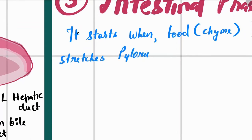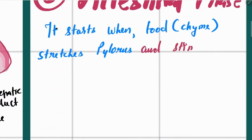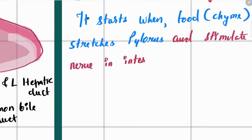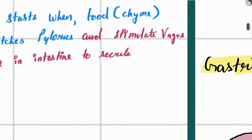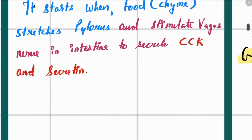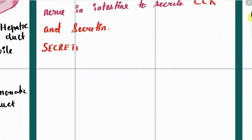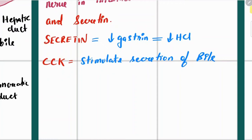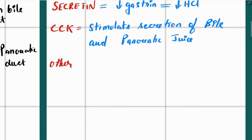The intestinal phase starts when the pyloric region of the stomach is stretched, stimulating the vagus nerve. The vagus nerve then stimulates the intestine to secrete CCK (cholecystokinin) and secretin. Secretin decreases gastrin production, reducing the amount of HCl in the stomach. Cholecystokinin stimulates the gallbladder to secrete bile and also stimulates the pancreas to secrete pancreatic juice.